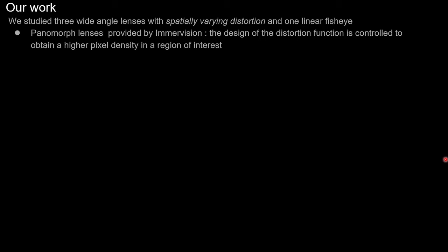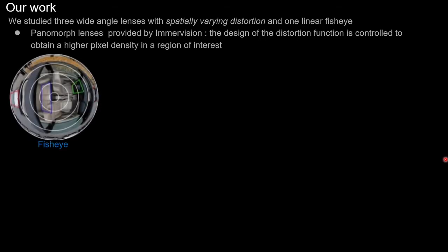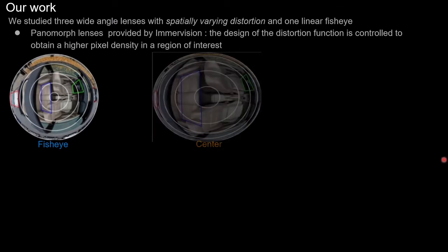More precisely, we simulate four different wide-angle imaging systems: a linear fisheye and three lenses with non-linear distortion called panomorph lenses. Such systems, provided by Imervision, are designed with a controlled distortion function and an optimized sensor coverage to increase the pixel density on a region of interest.